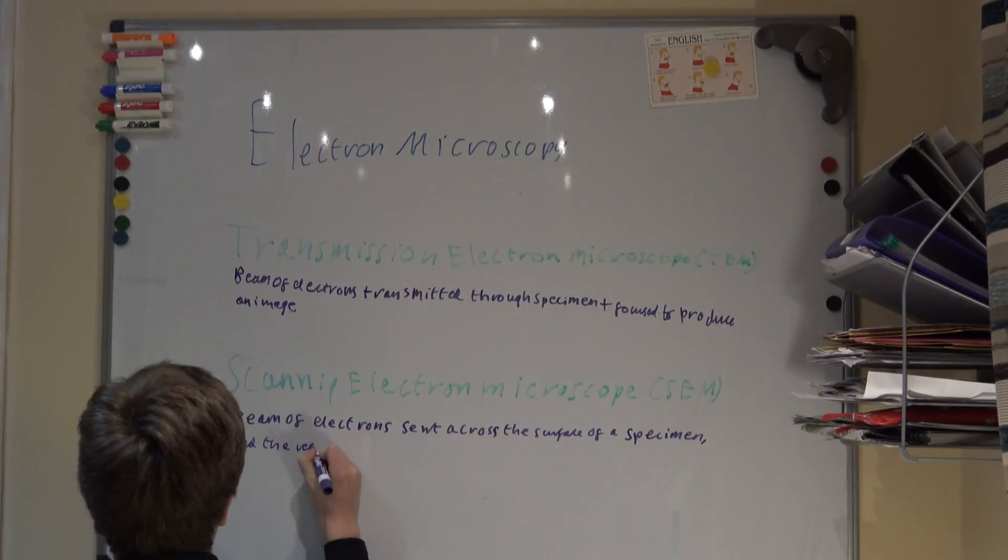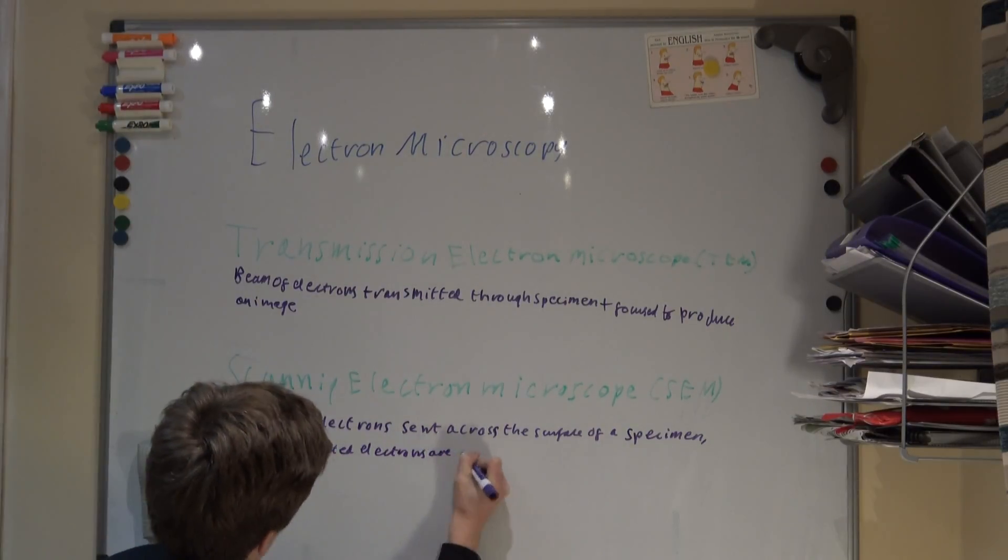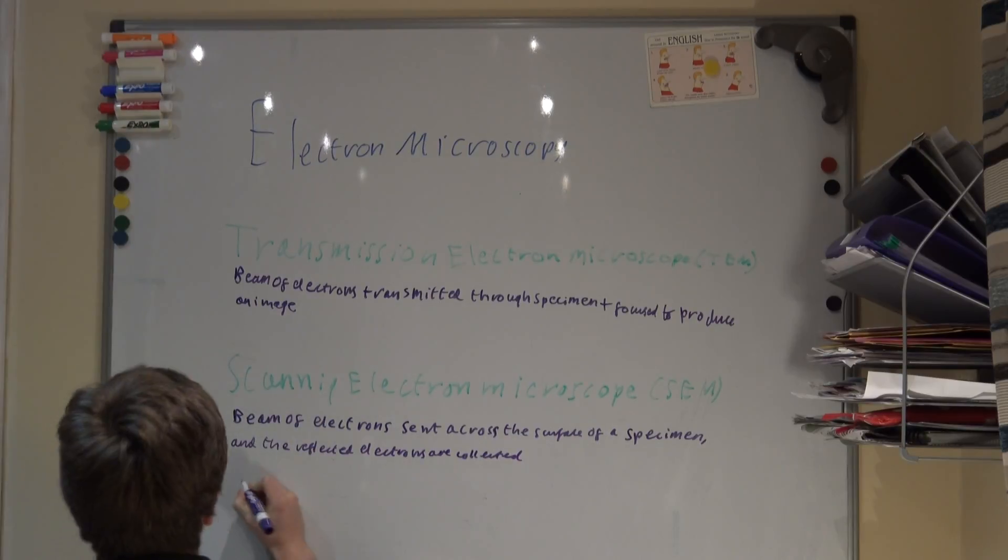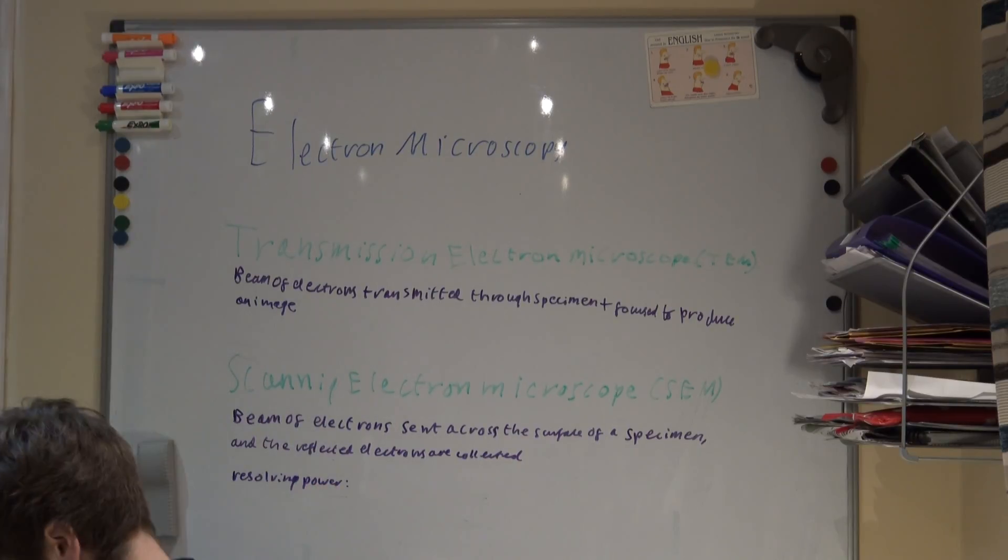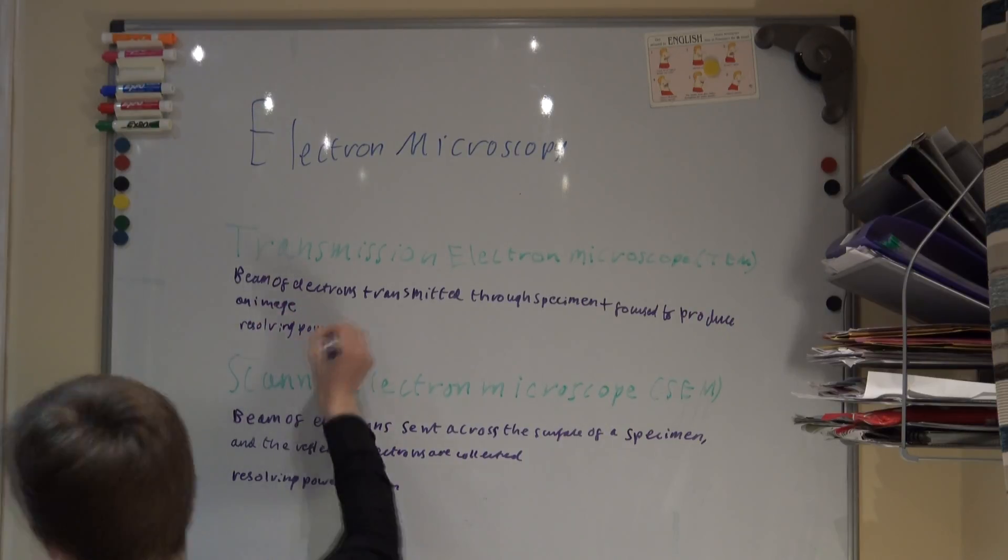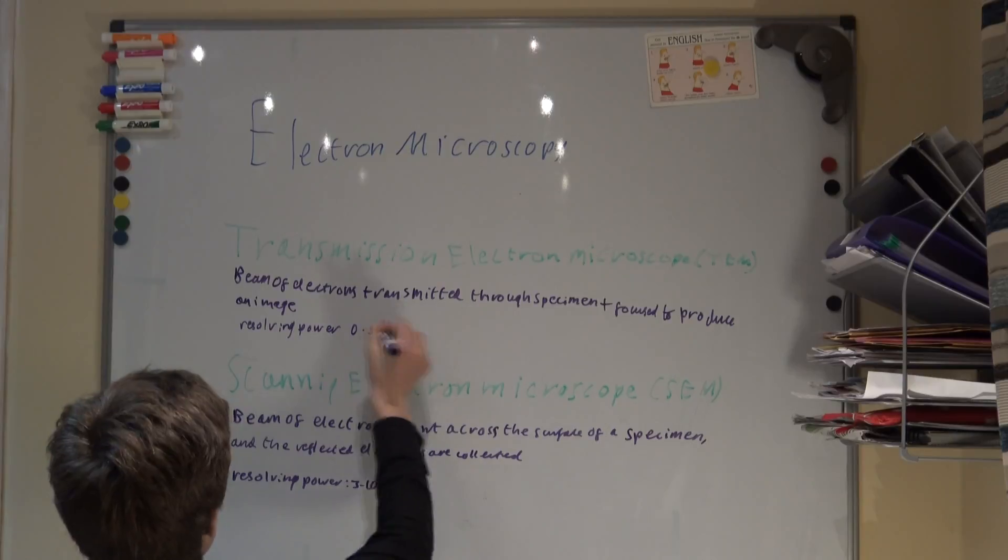In a scanning electron microscope, a beam of electrons descends across the surface of the specimen, and the reflected electrons are collected. The resolving power is from 3 to 10 nanometers, so the resolution is not as good, but 3D images can be produced.